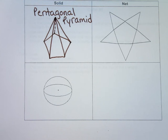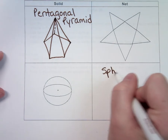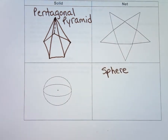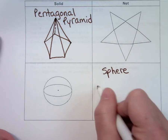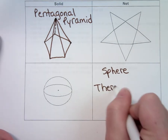The last shape is a sphere. Do you know what its net would look like? You can't unfold a sphere — there is no net for a sphere.